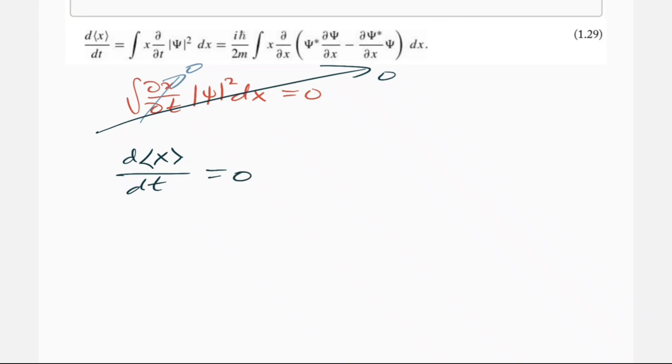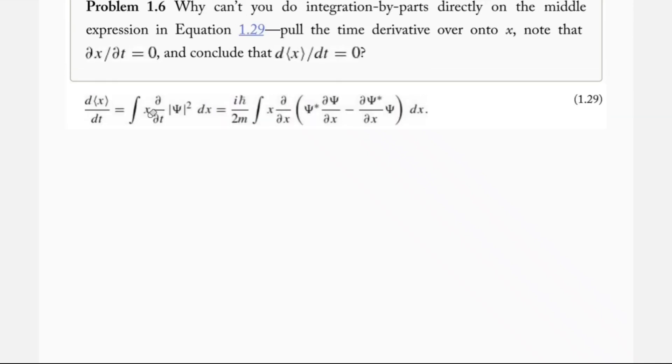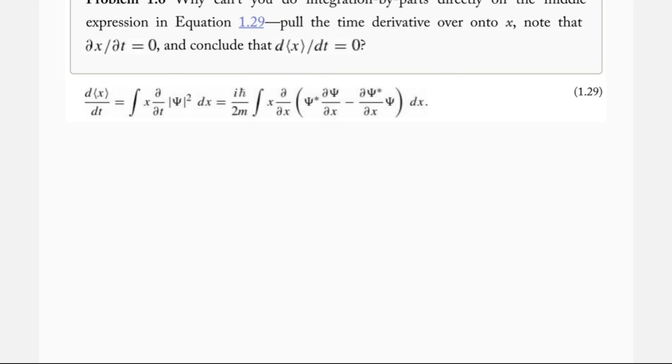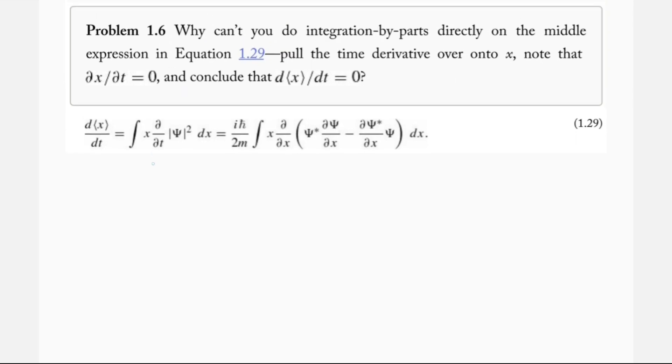We can't do that. And why is that terrible? Well this derivative with respect to t, this one right here, is being applied directly to the wave function squared. Okay, we cannot pull that onto x because we have to apply it to the wave function. It can't be applied to x.